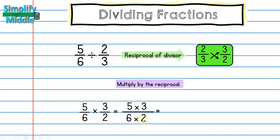I don't have any common factors between 5 and 2. But looking at 6 and 3, I can cross-cancel: 3 divided by 3 is 1, and 6 divided by 3 is 2. So for my new numerator I have 5, because 5 times 1 is 5, and my new denominator is 2 times 2, which is 4.